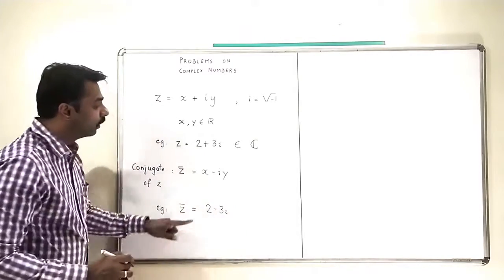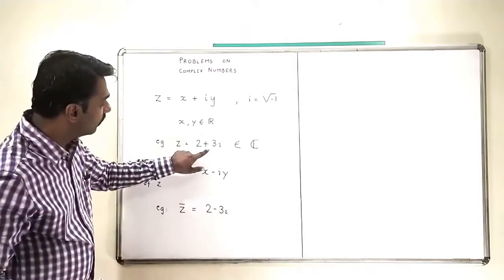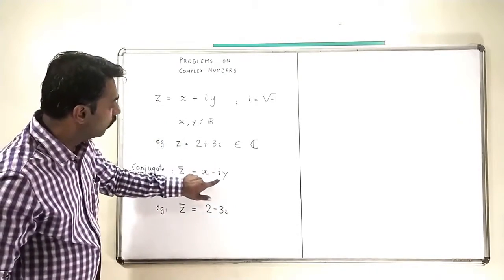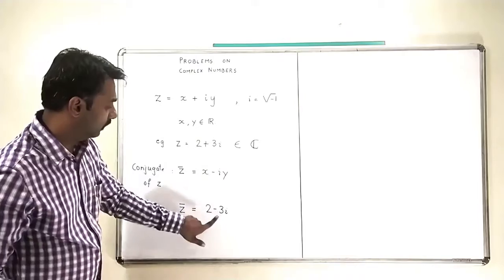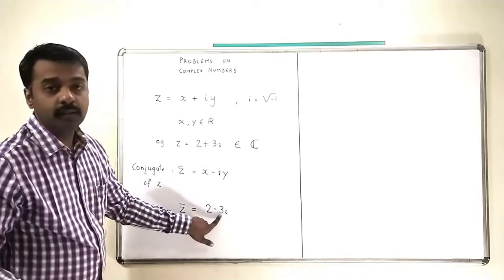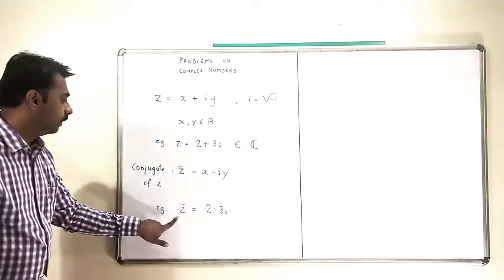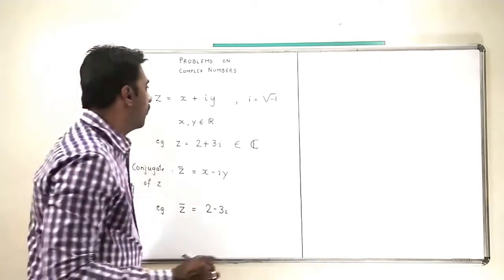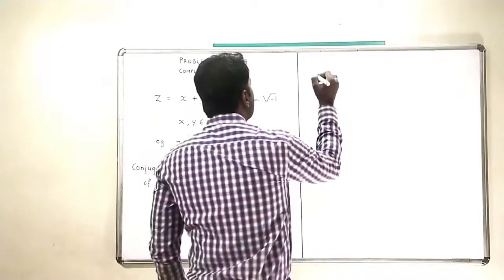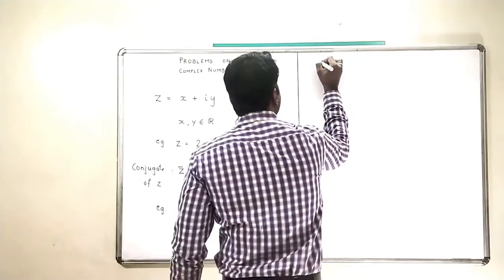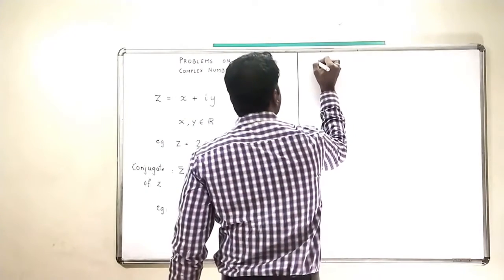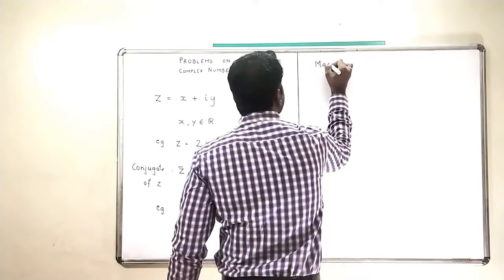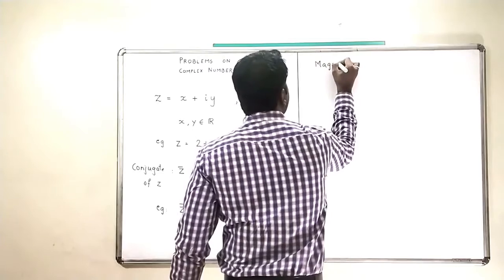So I am only going to change the sign of the Y component, that is minus 3. This is the conjugate. We also find something called the magnitude of Z.